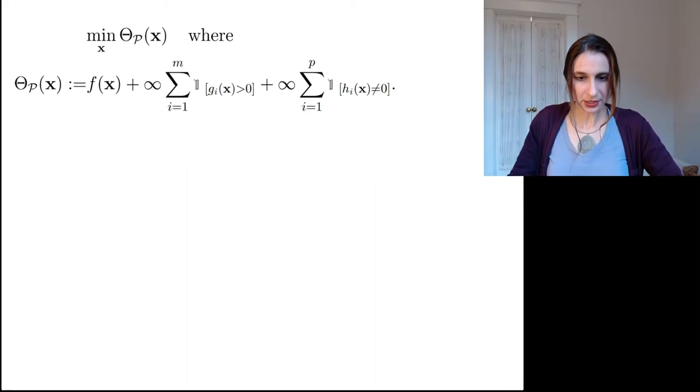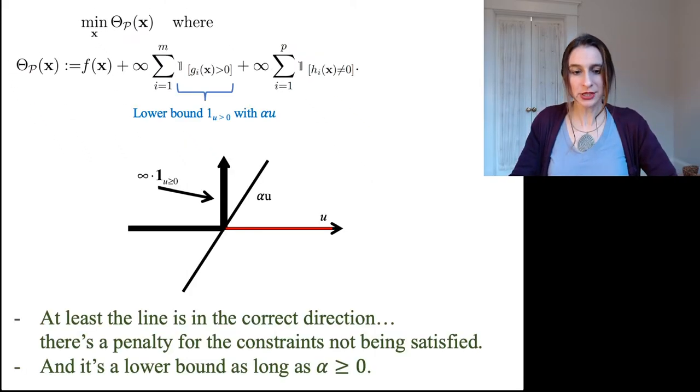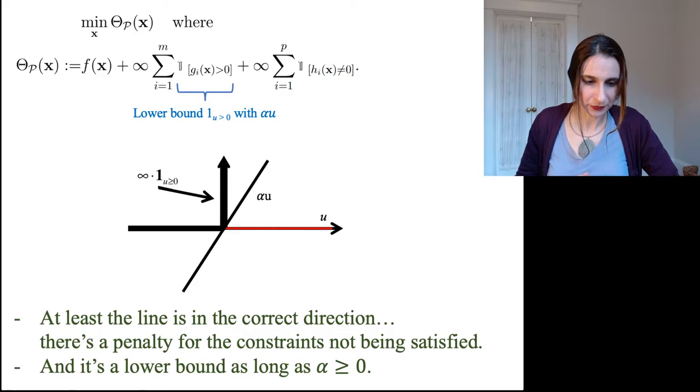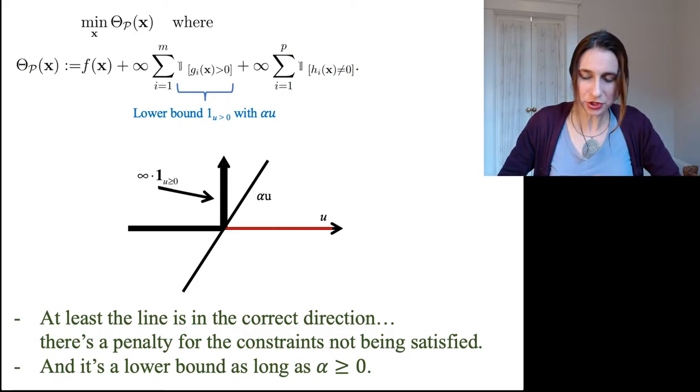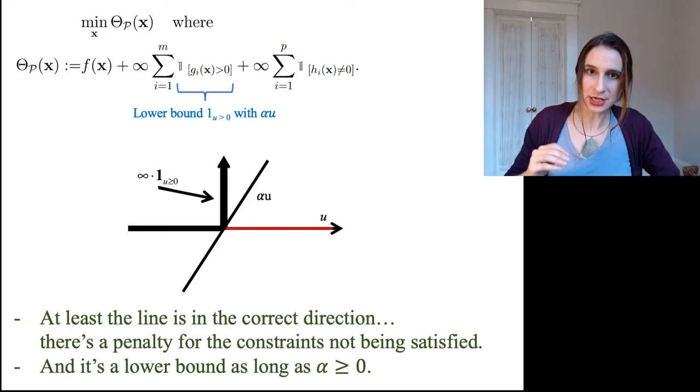Okay, so let's think about lower bounding these functions, again, that are infinity sometimes and zero other times by a line. Okay, now right here, I'm just working on the g constraints for now. So for the g constraints, if they're satisfied, the function is zero, okay?